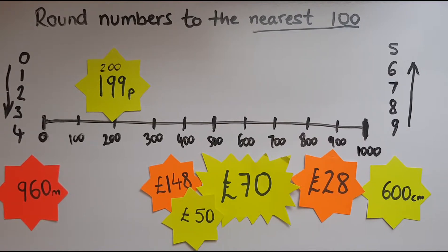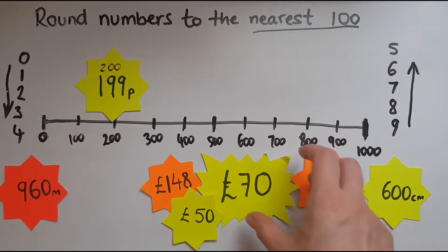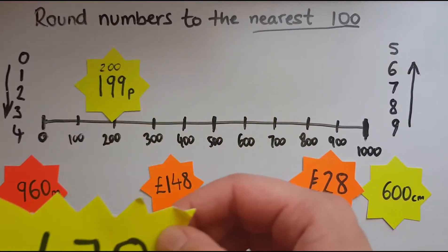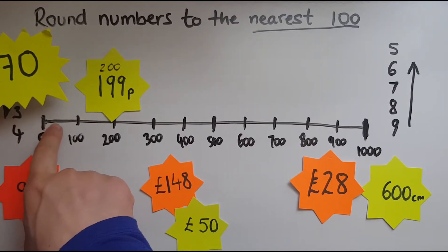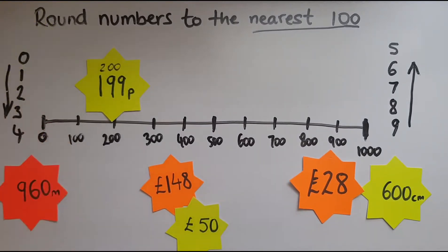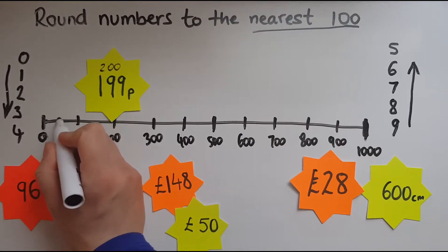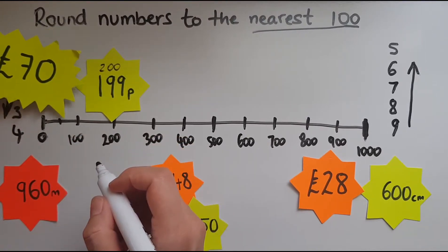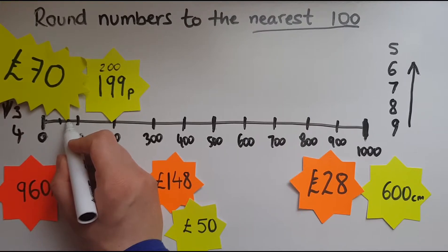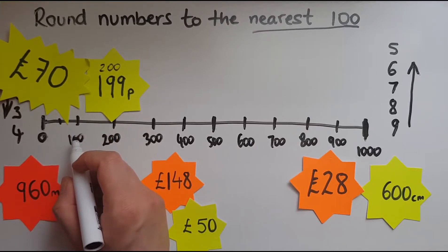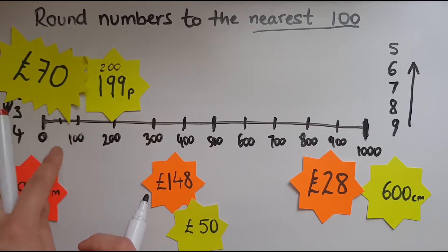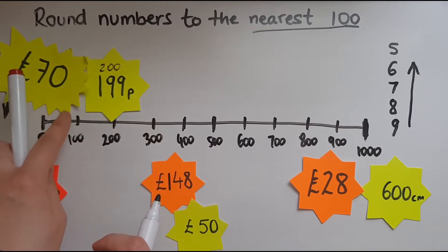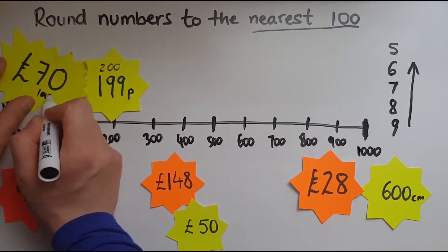So we'll round it to 200. Now we'll look at another one: 70. Where is 70? It's between 0 and 100. Halfway through 0 and 100 is 50, so 70 is about at this point — and as you can see, it's closer to 100 than it is to 0. So we'll say this rounds to 100.